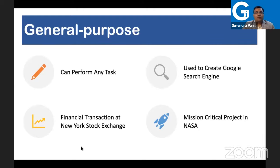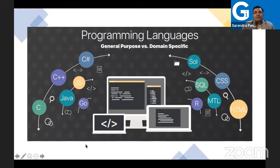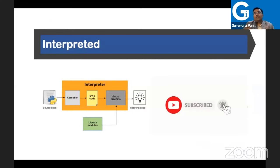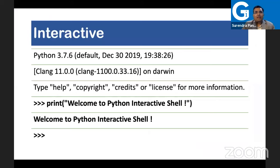General purpose means you can perform any task. Are there other types of languages? Yes — we have domain-specific languages. Domain-specific means something like a database language like SQL, web language like HTML, or data science language like R. Whereas in the case of Java, C, C++, and other languages, they are all for multi-purpose. I hope you are clear on what general purpose and domain-specific mean, and also on interpreted versus compiler-based languages.